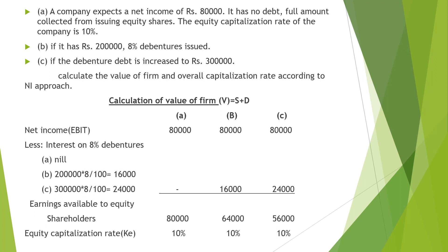Let us work through an example. A company expects a net income (EBIT) of rupees 80,000. The capitalization rate (cost of equity, Ke) is 10%. We consider three cases: no debt, debt of rupees 2 lakhs, and debt of rupees 3 lakhs at 8% cost of debt.